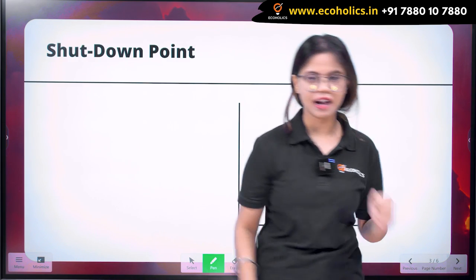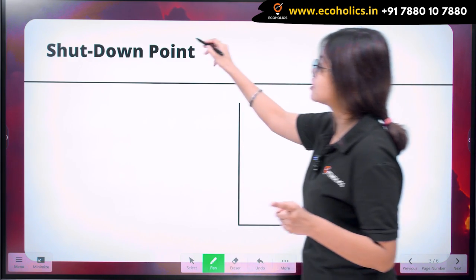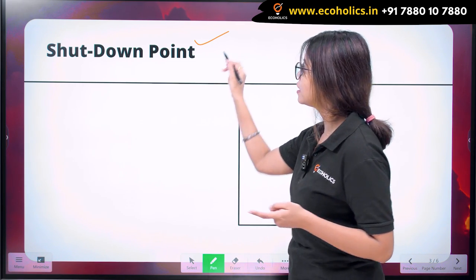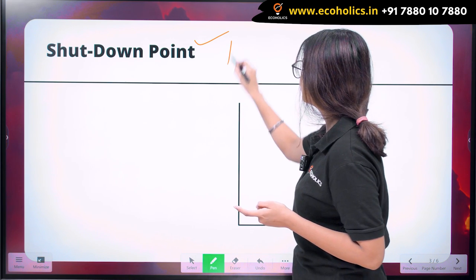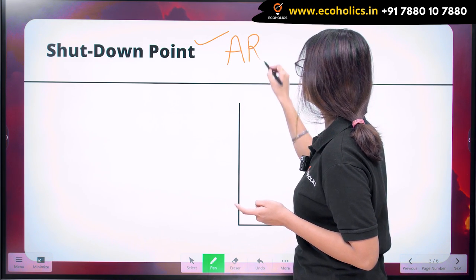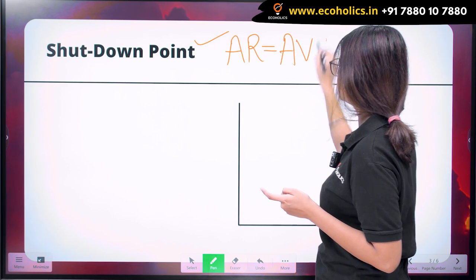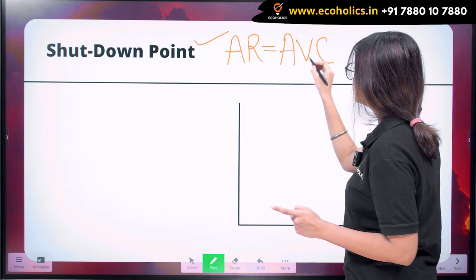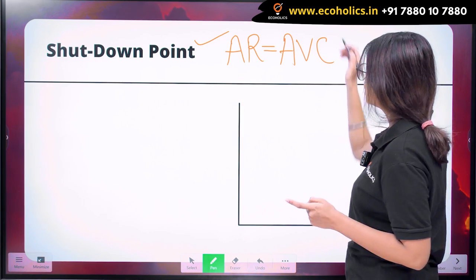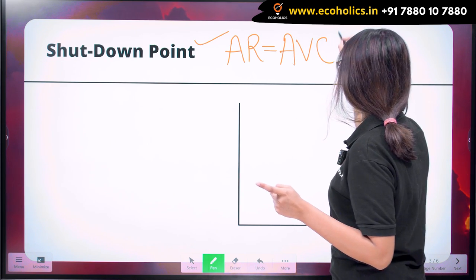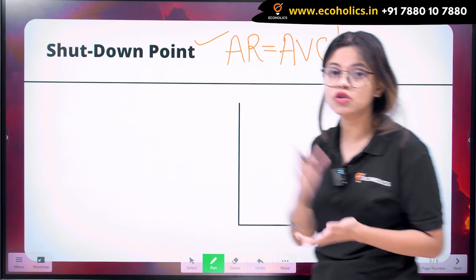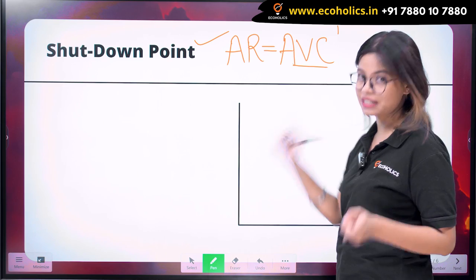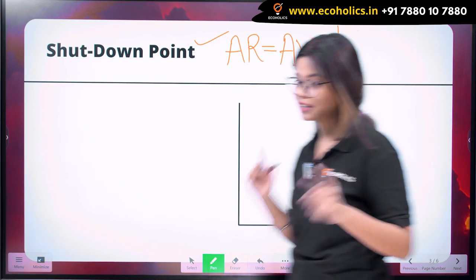Now let's understand the shutdown point. The shutdown point is when your average revenue equals AVC — meaning the firm is only able to cover the average variable cost. Here, the firms are not able to cover the fixed cost. They are only able to cover the AVC, and we will understand this with the help of a graph.